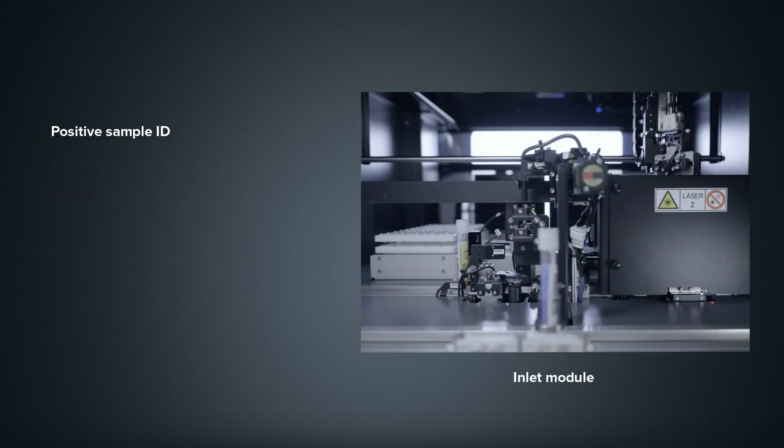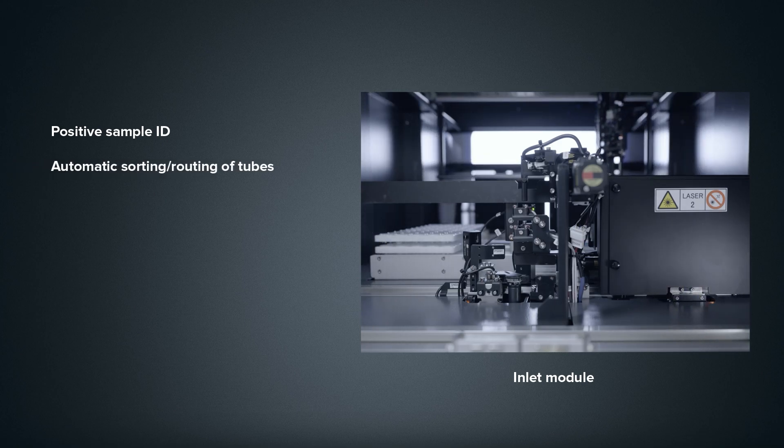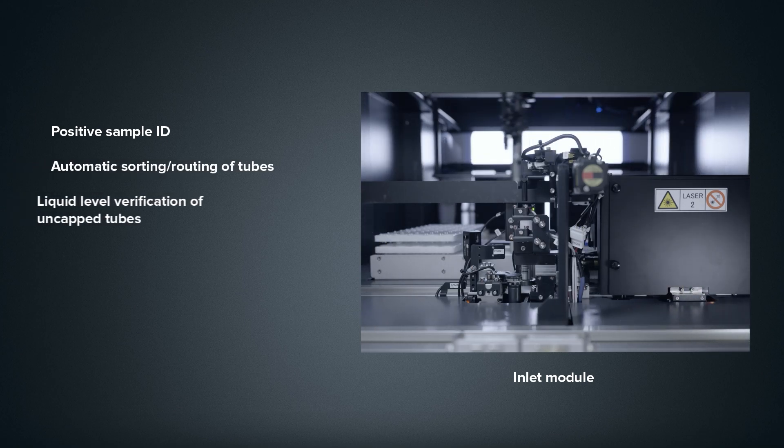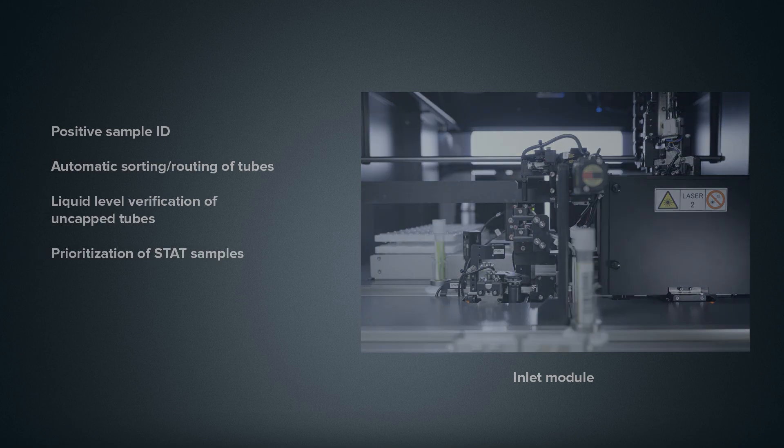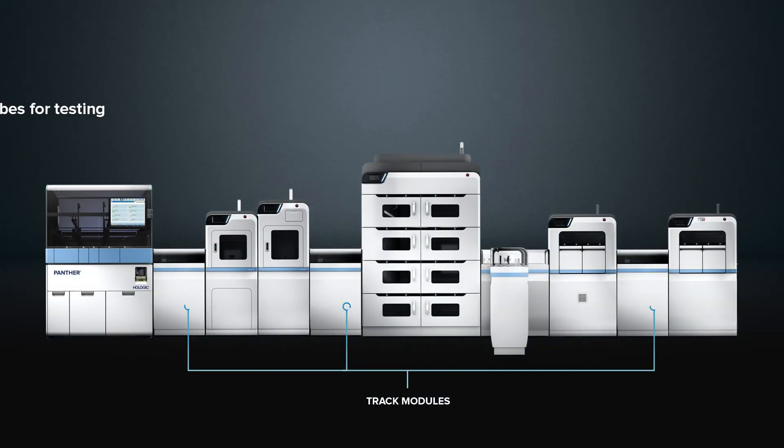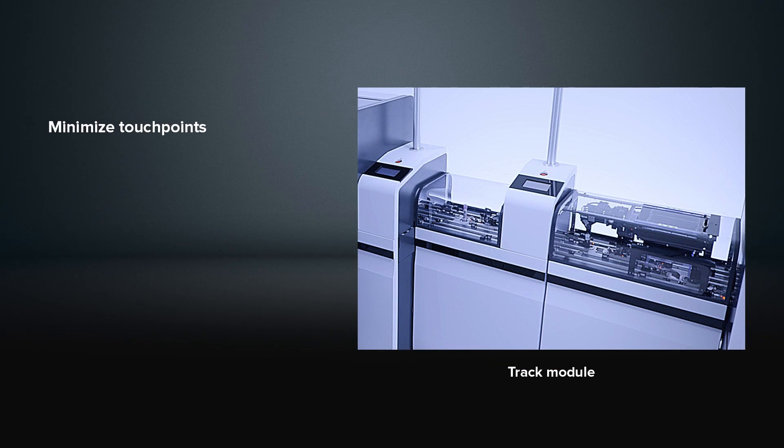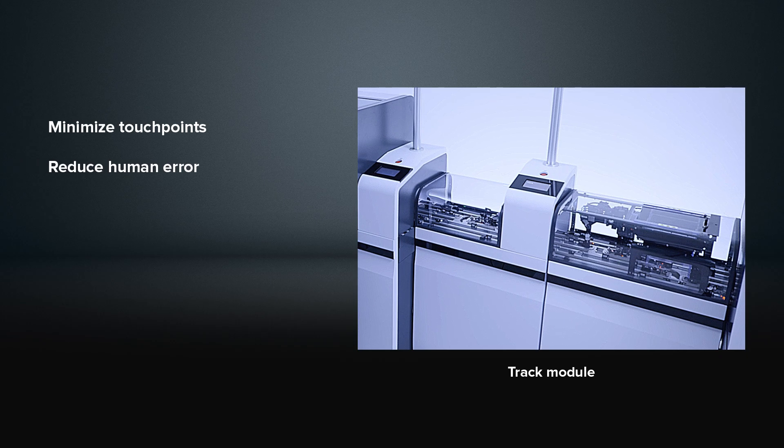Once loaded in the Inlet module, sample barcodes are read, and tubes with either single or multiple test orders will automatically sort and route onto the track. Functioning as the backbone of the system, the track module works as a conveyor, automatically transporting samples through each step of the workflow, minimizing touch points and risk of human error.